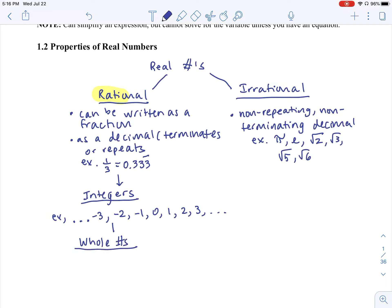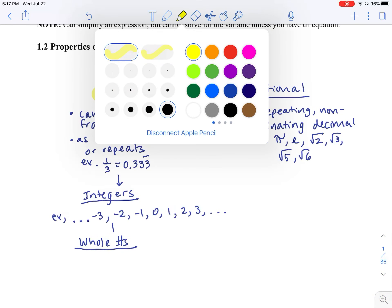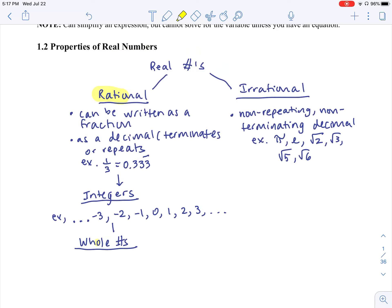Whole numbers, you might have heard this from a teacher before, but whole has the letter O in it, which resembles the number zero. So whole numbers are all the numbers starting with zero, all the integers starting with zero and going in a positive direction.